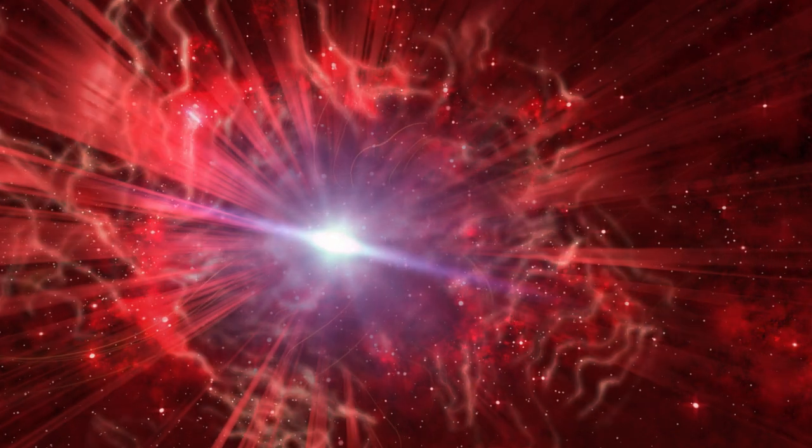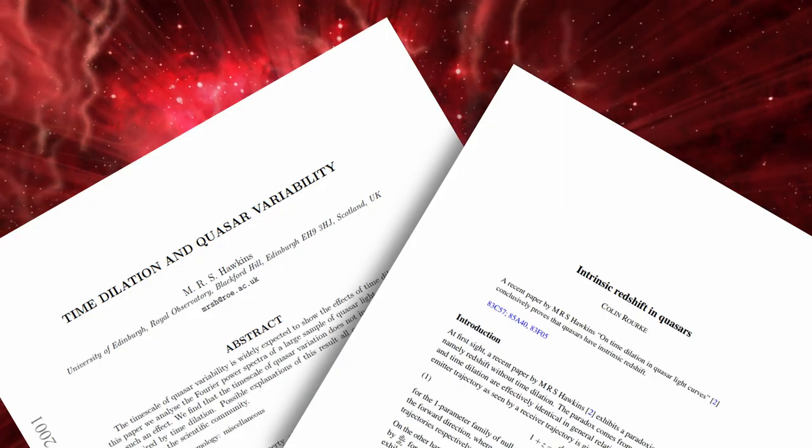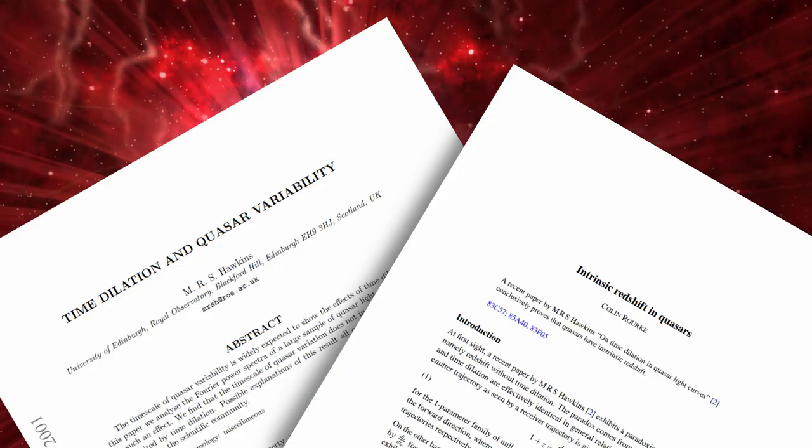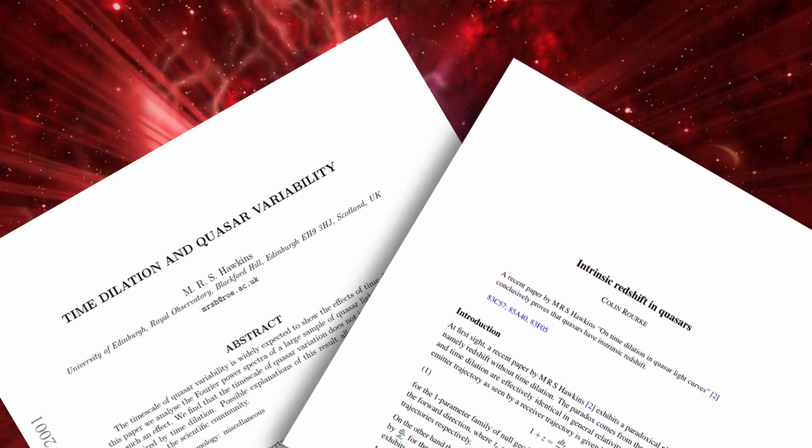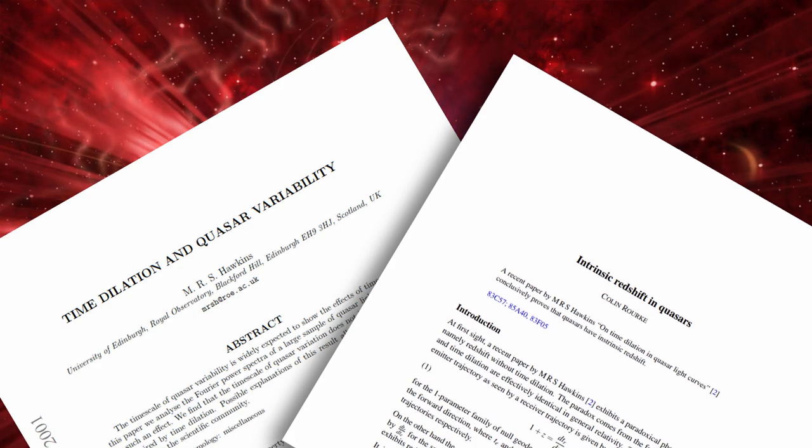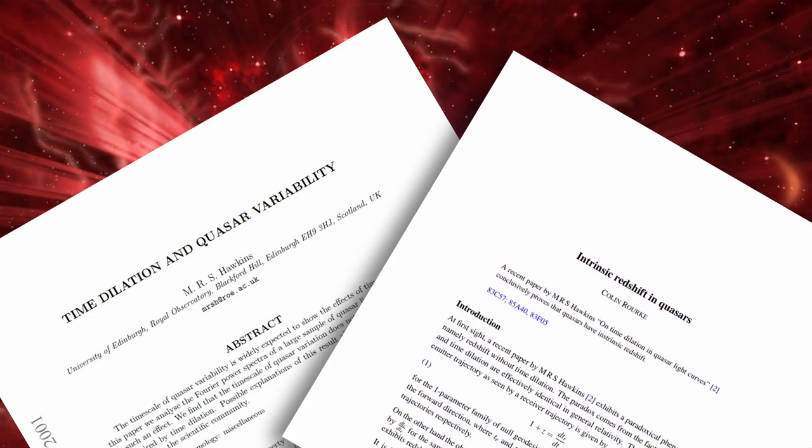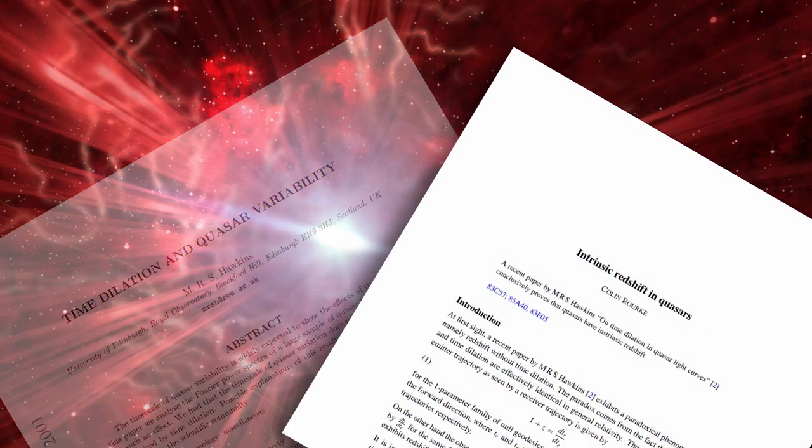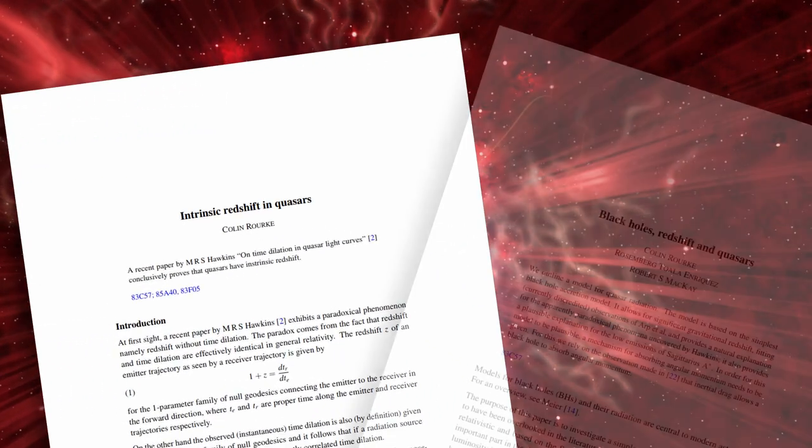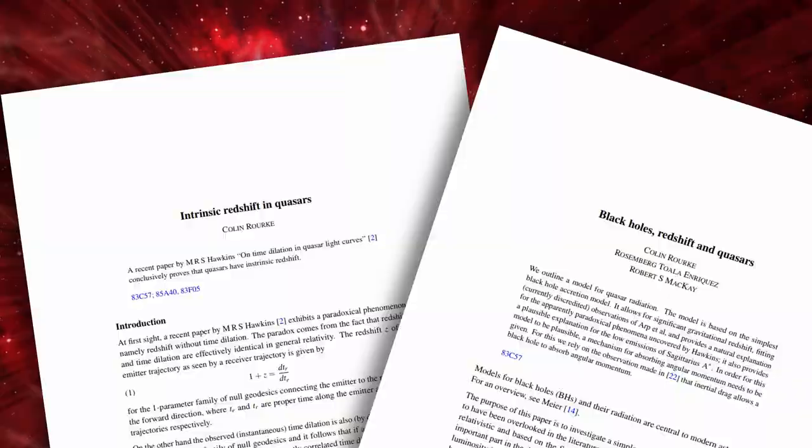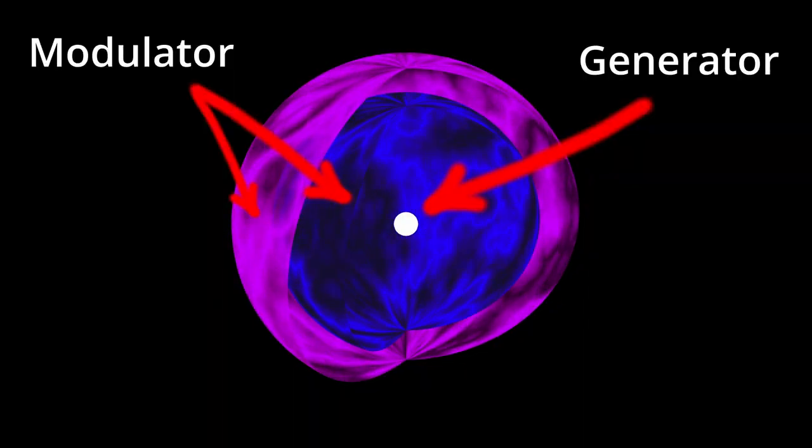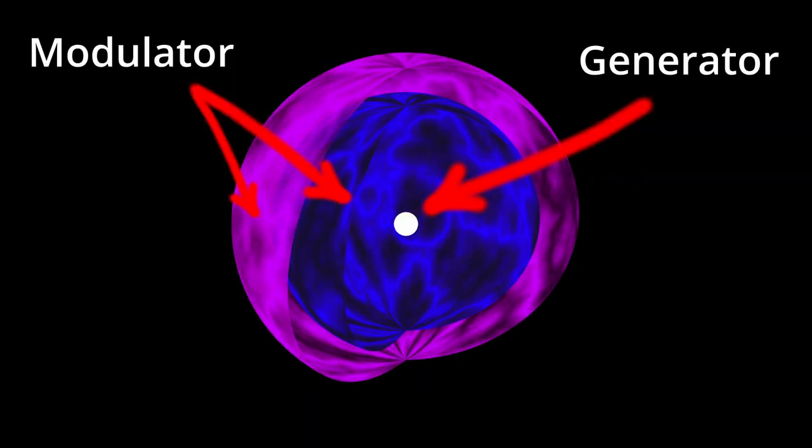I think the most important takeaways from both of these papers is based on Hawking's analysis there is a clear and large set of quasars that do not exhibit any time dilation. This cannot be explained using the current model of quasars nor an expanding universe. I'm intrigued by Rourke's paper as it presents a very different concept for looking at this problem. By separating the generator from the modulator it is possible to look at the problem in a new light.